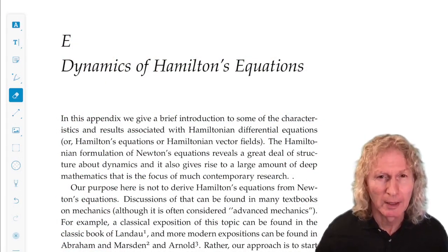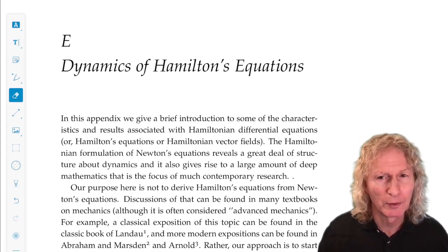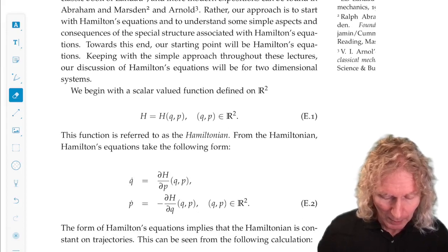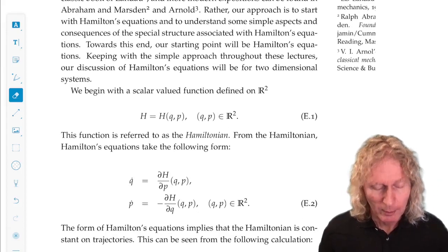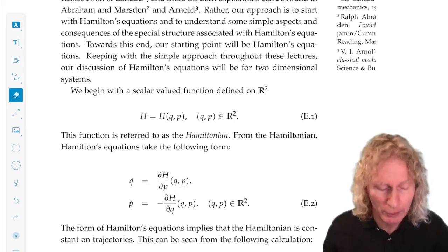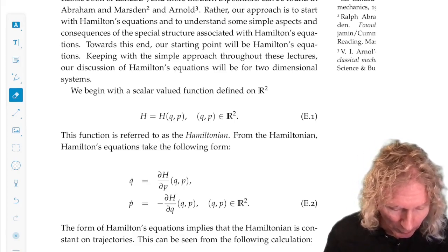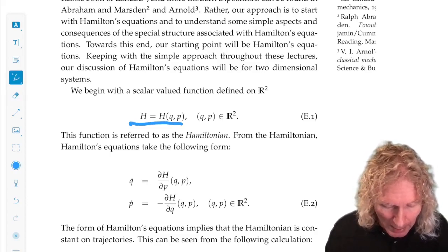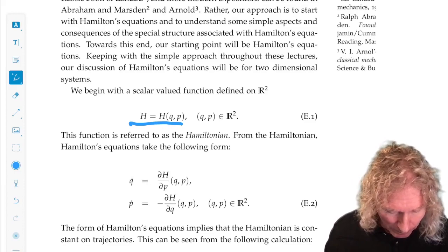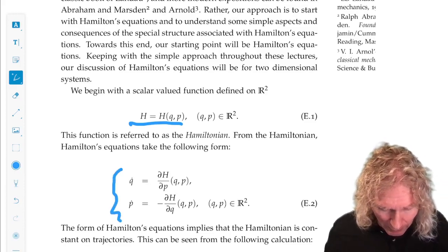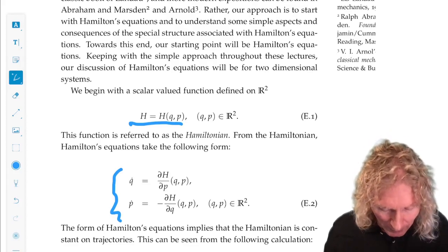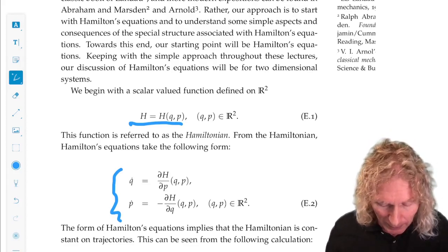I'm just going to talk about Hamilton's equations in the simplest form, in two dimensions. Hamilton's equations are derived from a scalar-valued function of the phase-space variables. I call that the Hamiltonian. And the vector field, or Hamilton's equations, are given by these cross-derivatives in some sense, but with a minus sign. And that's very important.